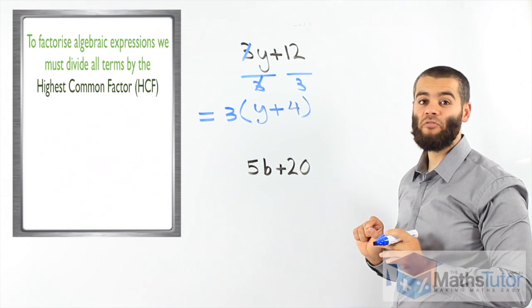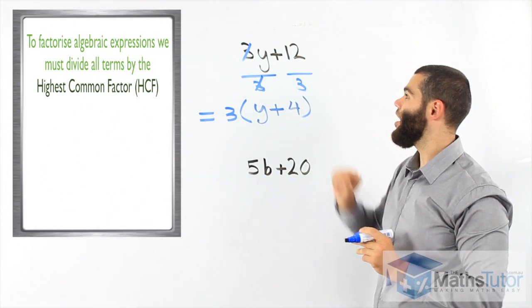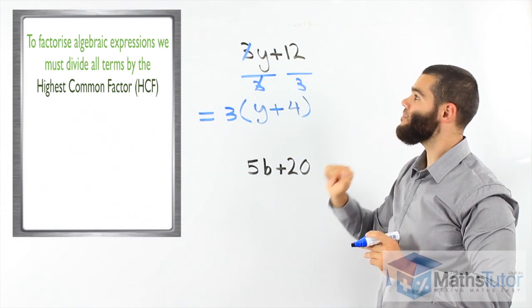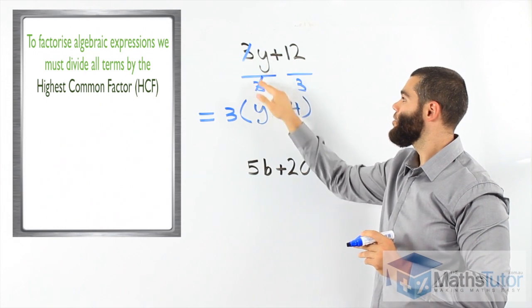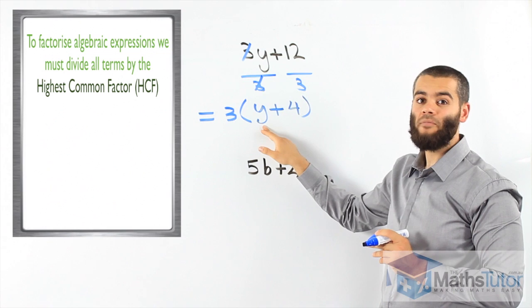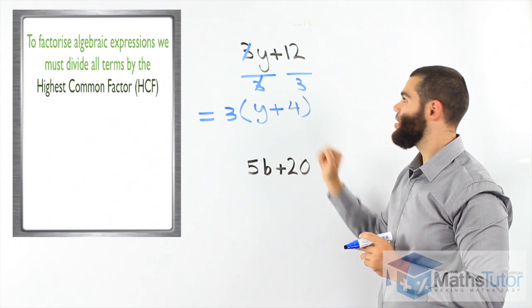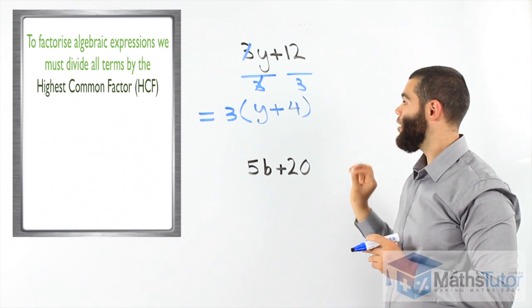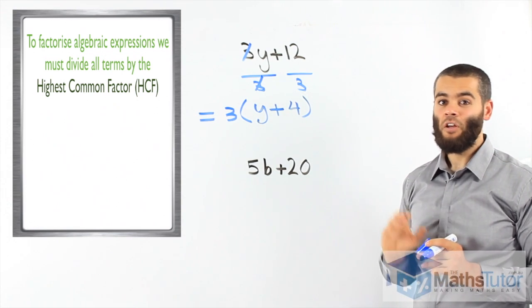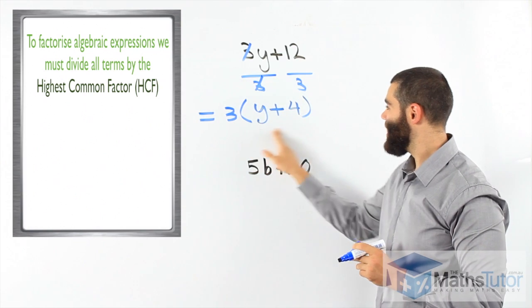One more time, we are looking for the highest common factor. We know 3 is the highest common factor in here and in there. We divide by 3, we're left with y, the plus, and 12 divided by 3 is 4. Now, what do you notice here? You notice that we have brackets.